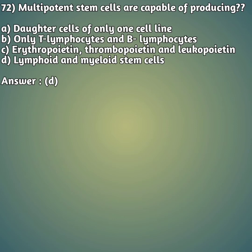Moving on to the 72nd question: multipotent stem cells are capable of producing - option A: daughter cells of only one cell line. Option B: only T lymphocytes and B lymphocytes. Option C: erythropoietin, thrombopoietin, and leukopoietin. Option D: lymphoid and myeloid cells. The right answer is answer D - lymphoid and myeloid cells.